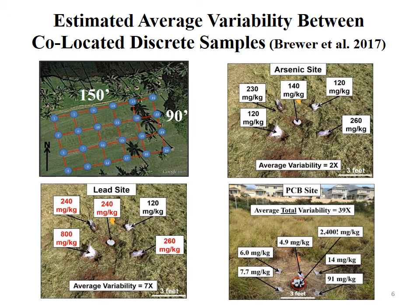At the PCB site we saw the greatest variability — we estimate 39-fold on average, and this is the minimum variability. The worst grid point showed 4.9 ppm in one discrete sample and 2,400 ppm just a few inches away — a 400 to 500-fold difference — completely random. The key point from the study is that data from a discrete sample collected at a grid point is invariably going to be random within an unknown range, depending on contaminant heterogeneity within that area.